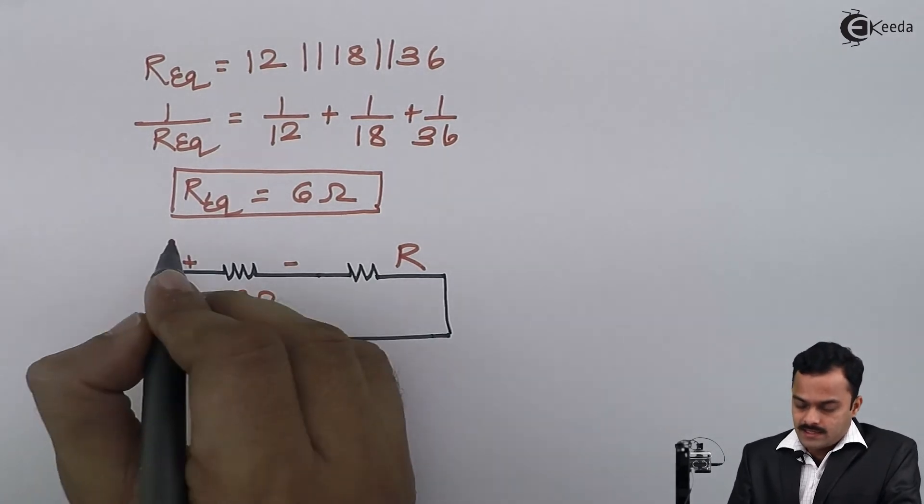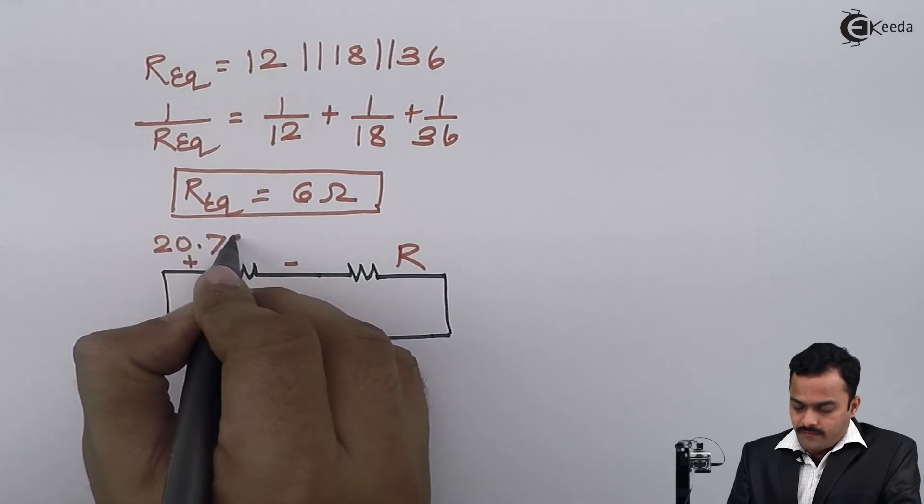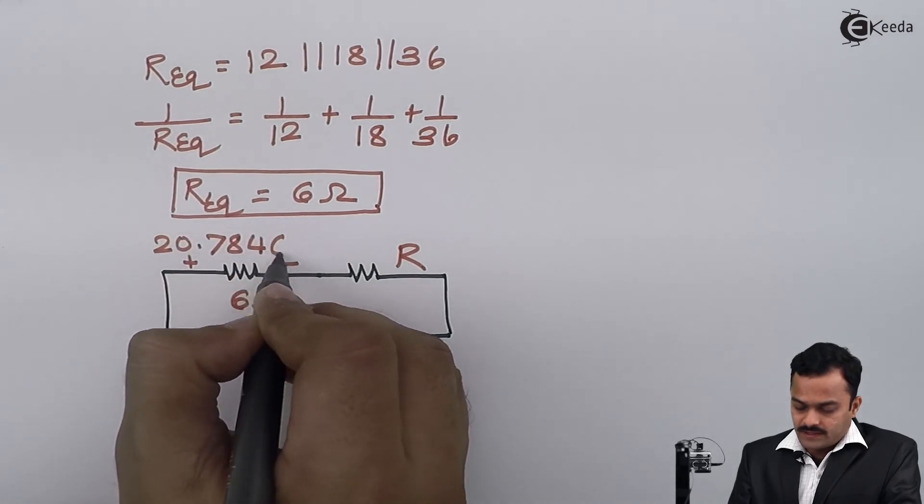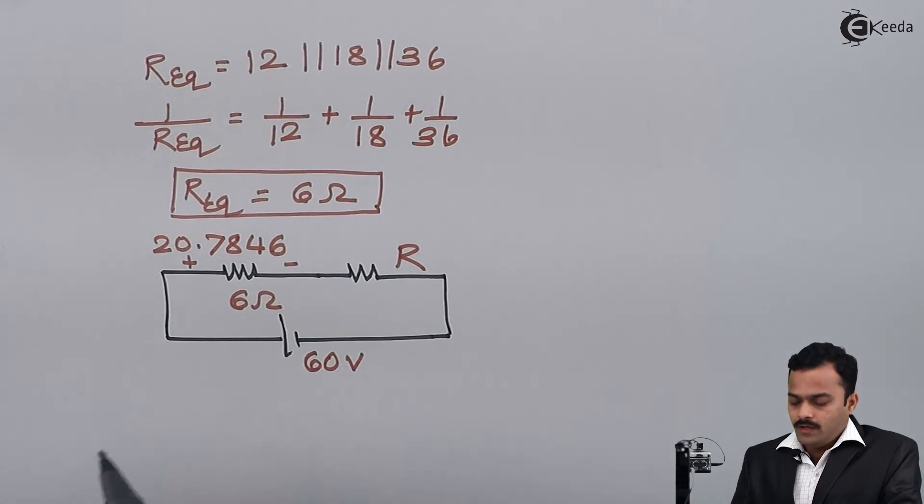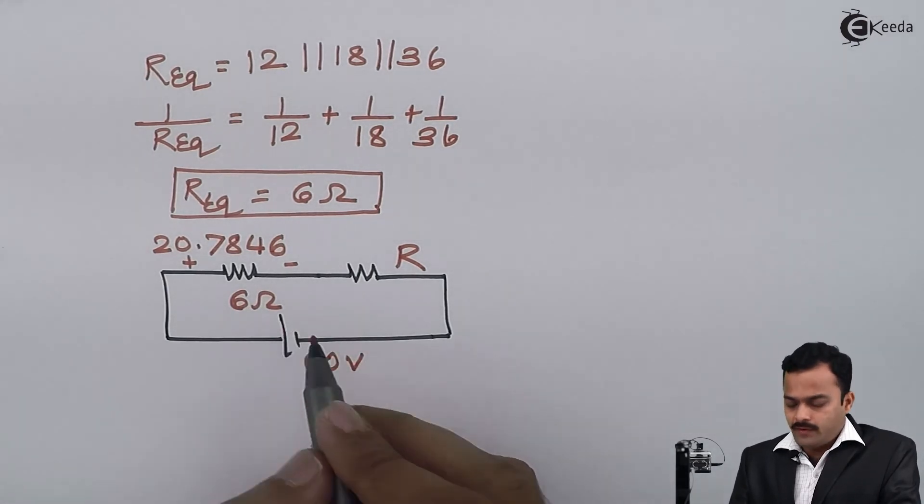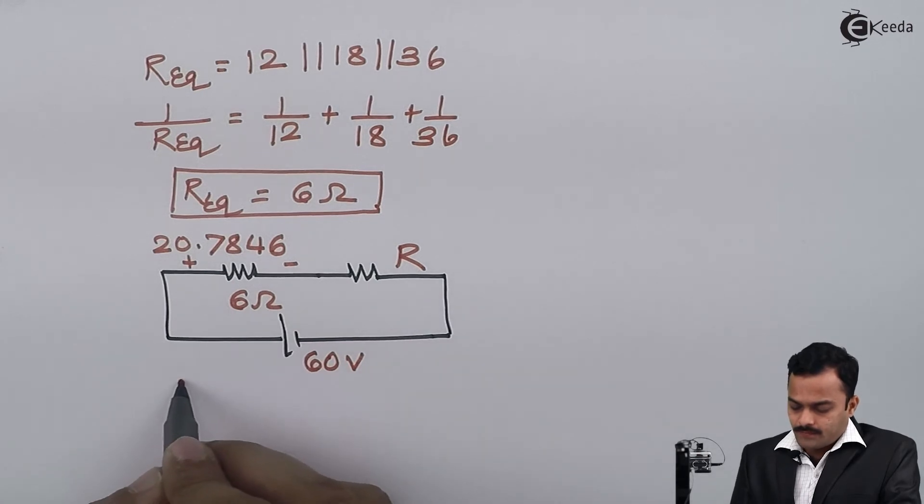The 60 volt battery remains as it is, this is the unknown that we're supposed to find, and the equivalent resistance is 6 ohms with voltage between these two points as 20.7846. Now it's a simple problem where I can apply voltage divider rule.